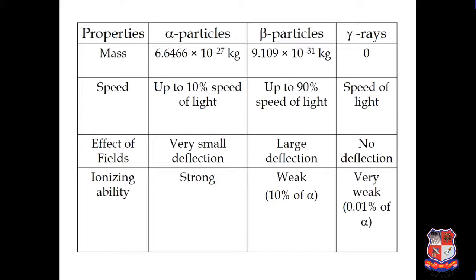If we consider the mass of alpha particle, it is 6.64 × 10⁻²⁴ kg. Beta particle has a mass of 9.109 × 10⁻³¹ kg. And gamma rays have zero mass. With reference to speed: alpha particle has velocity up to 10% of the speed of light. Beta particle, being a fast moving electron, has velocity up to 90% of the speed of light. And gamma rays, being electromagnetic waves, travel at nearly equal to the speed of light.